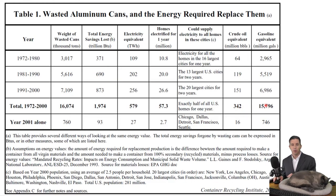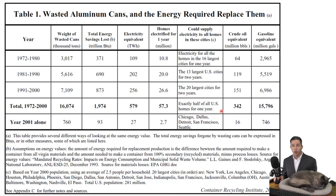Back to that 2002 paper: they calculated how many aluminum cans were wasted from 1972 to 2000. One striking number: the electricity thrown away equals exactly half of all US homes for one year. We could power half of all homes in the United States for a year on the electricity wasted from aluminum cans alone. That's equivalent to 15,796 million gallons of gasoline, or 342 million barrels of oil — that's how much energy equivalent we threw away during that time period.